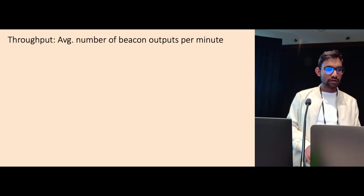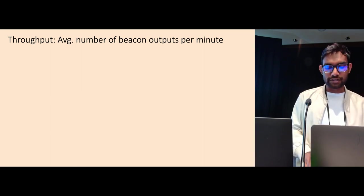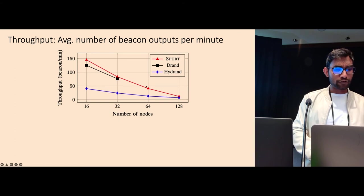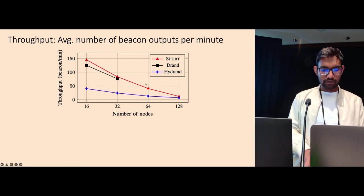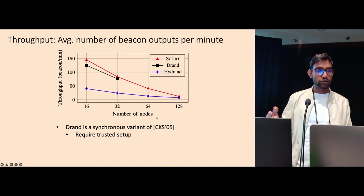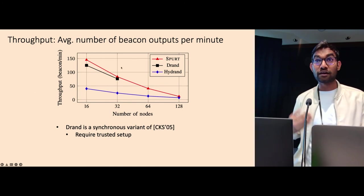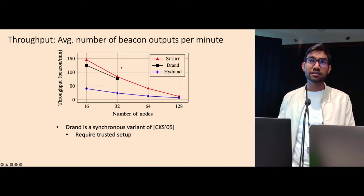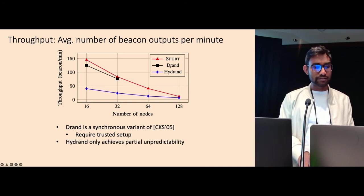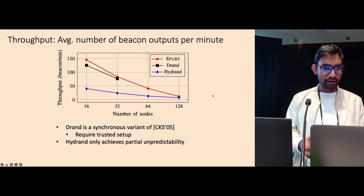So let's look at our evaluation results. First, we want to look at the average number of beacons output per minute. How fast is the system? How often can the system generate beacon outputs? And here, if you look at with 64 nodes, our protocol can output about 40 beacons per minute which is about one beacon every one and a half second. And in comparison, we compared with DRAND which is a variant of the CKS protocol. Recall CKS05 requires trusted setup and DRAND is a synchronous variant of it. So even with much stronger assumption, our performance is slightly better than DRAND. We believe this is because of their use of inefficient broadcast channel and also some other implementation issues. We also compared with Hydrant which has one implementation. Hydrant has some unpredictability issue and ours is perfectly unpredictable and we also still perform much better than these works.